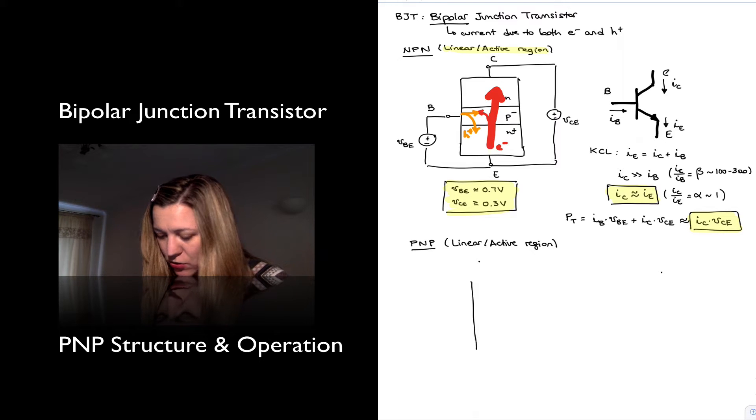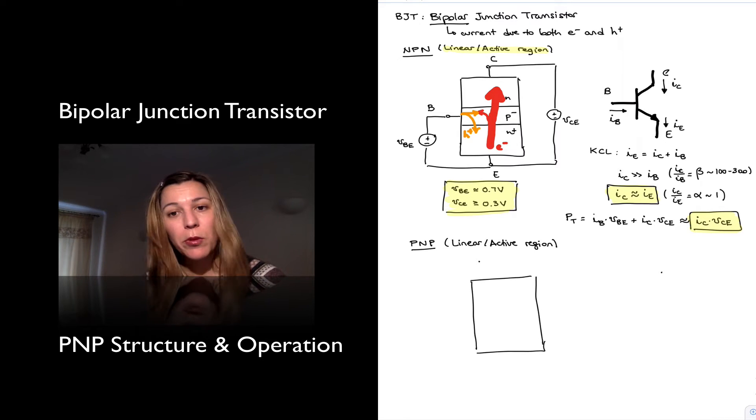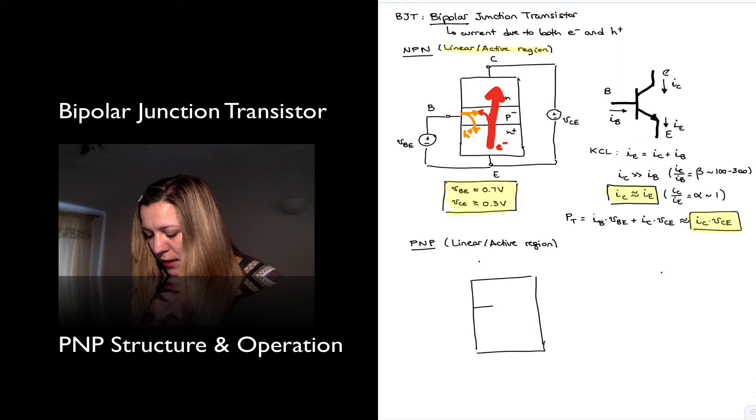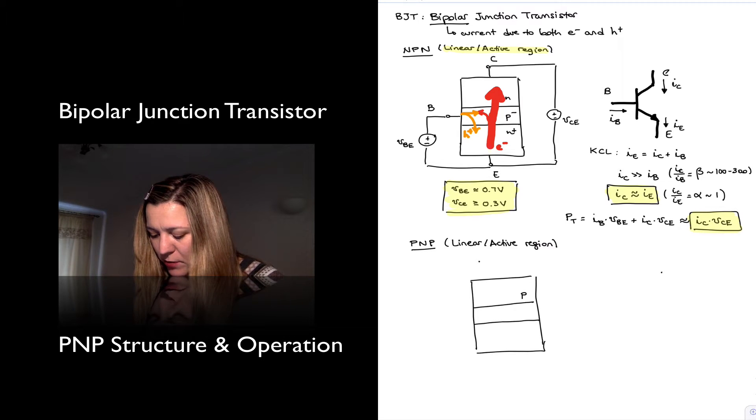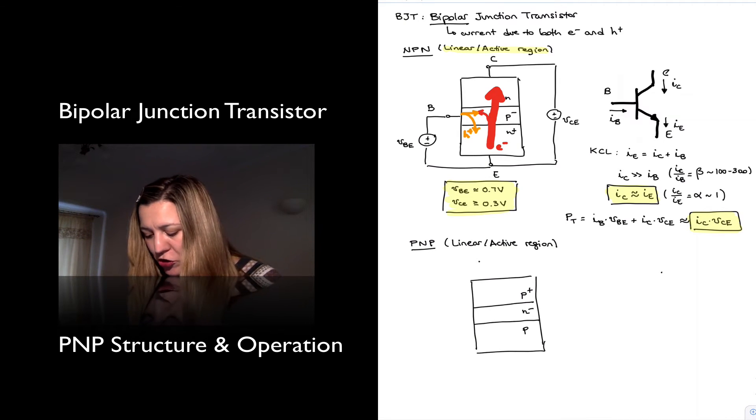The PNP transistor is similar in structure to the NPN, except with complementary regions. So instead of having an N-type collector, P-type base, N-type emitter, we will have just the opposite: a P-type emitter, N-type base, P-type collector, so PNP. The emitter is going to be still heavily doped. The base is going to be lightly doped and narrow for proper operation.